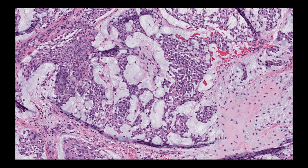Myoepithelial cells can assume a range of morphologies. They can look epithelioid, basaloid with less cytoplasm, or spindle when the nuclei are elongated and sit parallel to the basement membrane of tubular structures. The ductal cells usually have nuclei polarized around the central lumen, perpendicular to the basement membrane — morphologies also known from breast pathology. Myoepithelial cells may also have a clear cell morphology or more peculiar cytomorphologies, such as the prominent plasmacytoid appearance where nuclei are pushed to the cell periphery with eosinophilic cytoplasm.